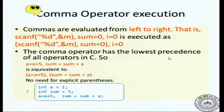The comma expression has the lowest precedence of any operator in C. So if you have an operation like a equal to a plus 5 comma sum equal to sum plus a, what will happen is: you do the expression a equal to a plus 5, then do the expression sum equal to sum plus a, and then evaluate the comma expression. Therefore, when you have a comma expression you do not need explicit parentheses because the precedence takes care of it — it has the lowest precedence so it will never get swallowed into a bigger expression involving other operations. It will always be evaluated at the end.